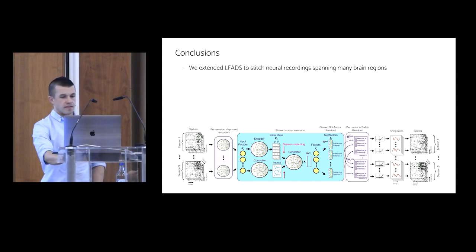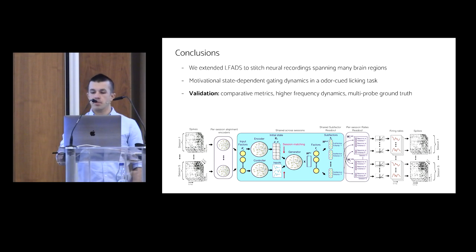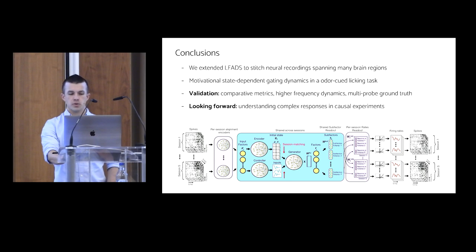So wrapping up, we implemented an extension to LFADS that enables stitching of brain-wide ETHIS data sets, where neurons are recorded in many brain regions. Fit to this data set, our model utilizes a thirst-dependent mode of activity to dynamically gate, to perform dynamic gating in an odor-queued licking task. We have a lot of work to do towards validating this model, especially looking at the more complex, higher-frequency features of the data in some regions, and we'd also like to use some multi-neuropixel probe recordings as ground truth to validate the stitching process. Looking forward, I think there's a lot one can learn by looking at this learned model's generative dynamics, and I'm particularly interested in trying to use this approach as a tool to better understand the effects we see in causal experiments where we might stimulate some region and want to better understand both the direct and indirect effects on ongoing dynamics throughout the brain.